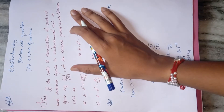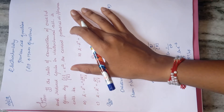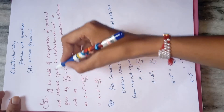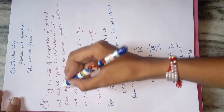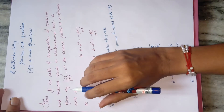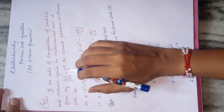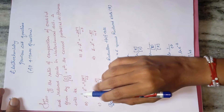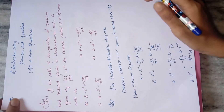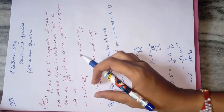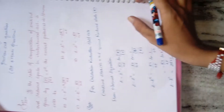Let's begin with June 2011, followed by December 2011 and 2012, and June and December 2013 — six questions total. The first question: if the ratio of composition of oxidized and reduced species in an electrochemical cell is given by [O]/[R] = e², the correct potential difference E - E° will be?